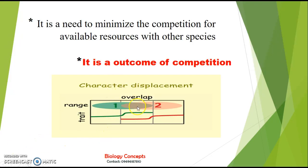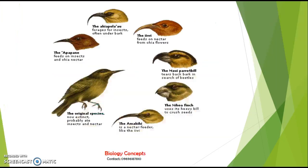Character Displacement — here you can easily see there are two species, one and two. This is the niche overlap and these are the traits showing the character. In one line, we can say that Character Displacement is basically an outcome of competition.